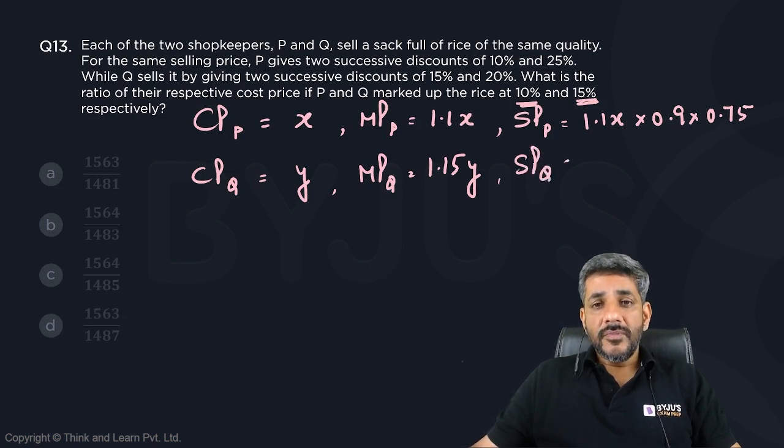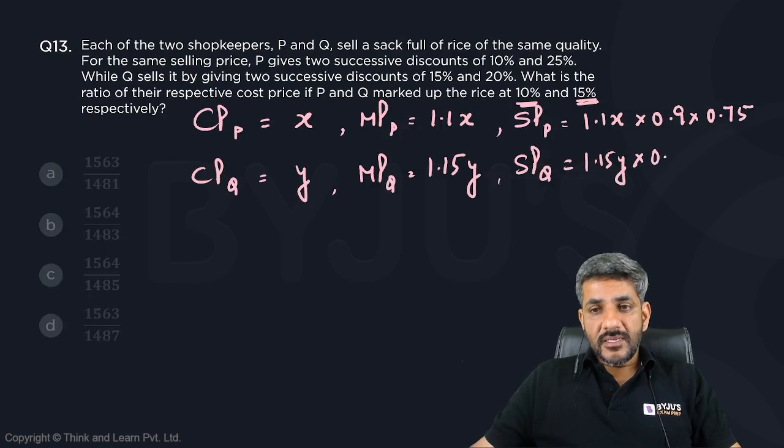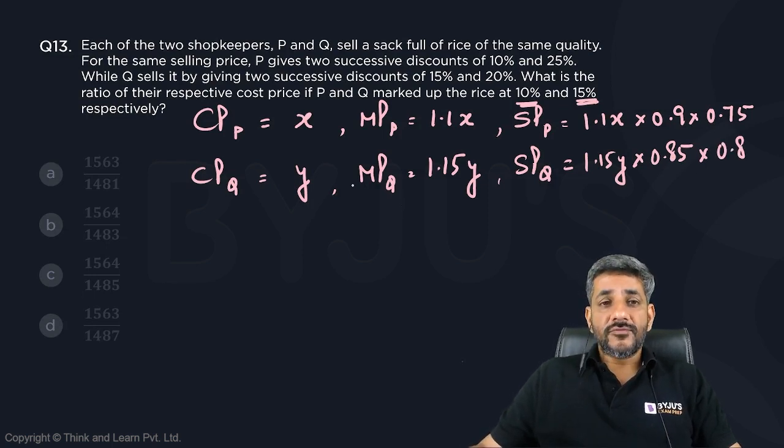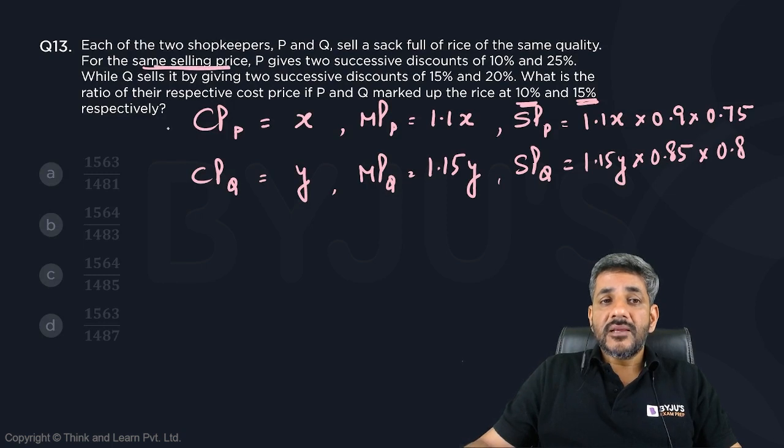What is the selling price of Q? He has given two successive discounts of 15% and 20%. So 1.15Y is the marked price, first discount of 15% means 0.85, next discount of 20% means 0.8. That is the selling price of Q, and they have the same selling price.